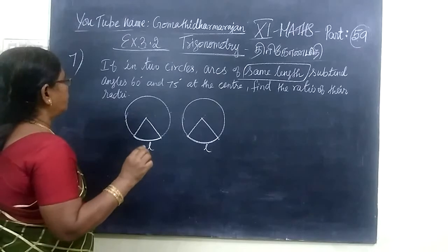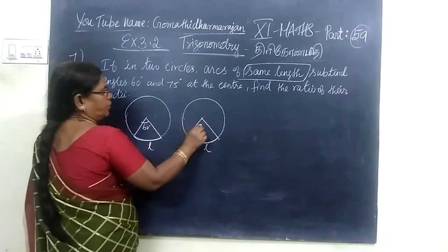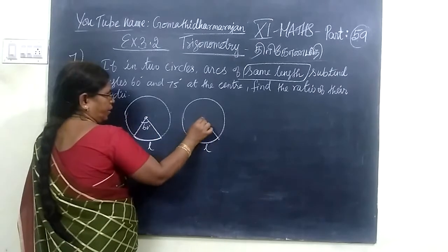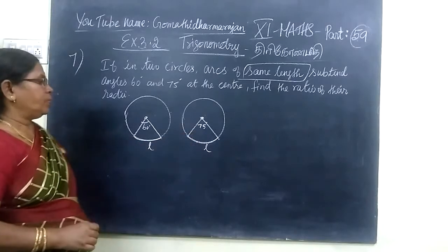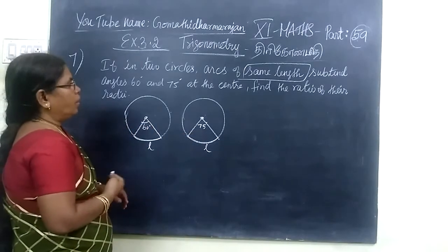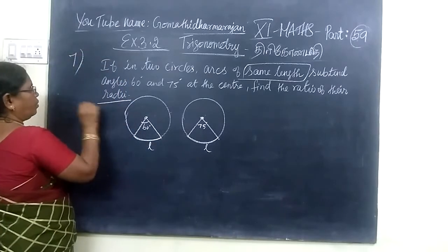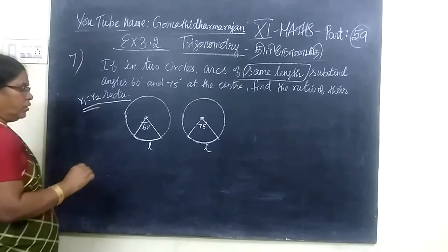Then after that, subtending angles 60 degrees, one is 60 degrees, this one is 75 degrees. So this one is 60, this is 75 degrees.